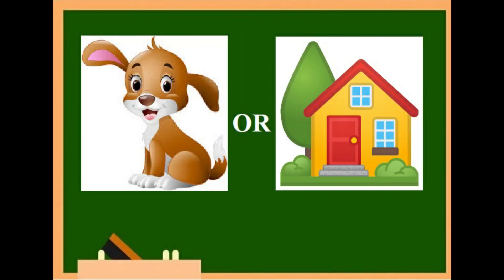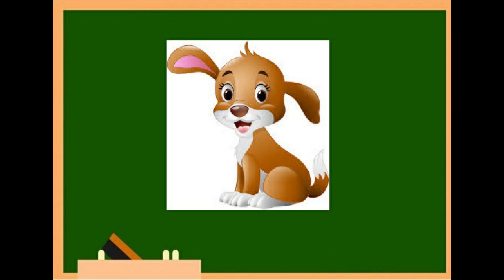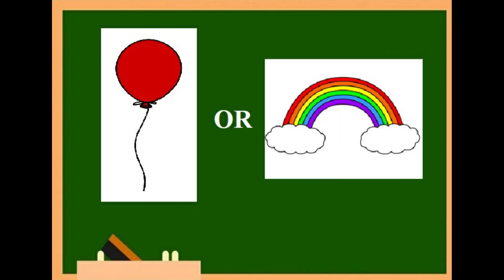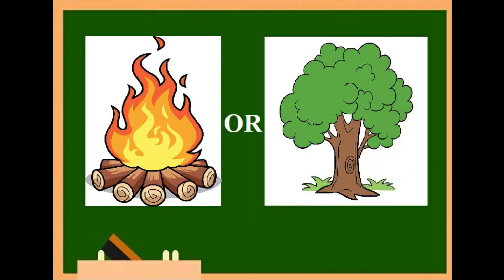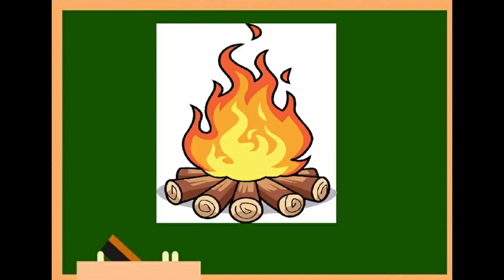Fifth: it breathes air — a dog or a house? Of course, a dog. Sixth: we blow air into this — a balloon or a rainbow? Yes, it is a balloon. Seventh: it is making the air dirty — the fire or the smoke, or a tree? The fire or the smoke is making the air dirty.